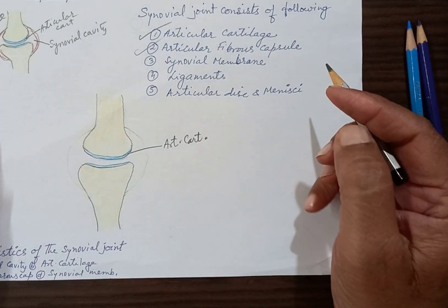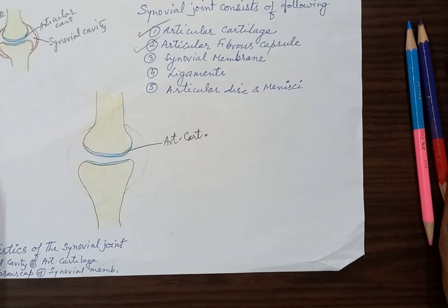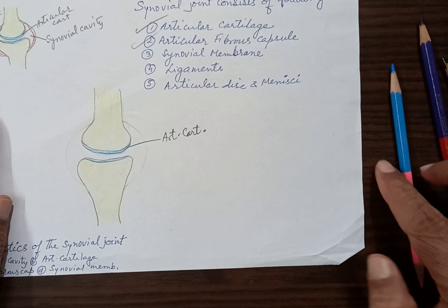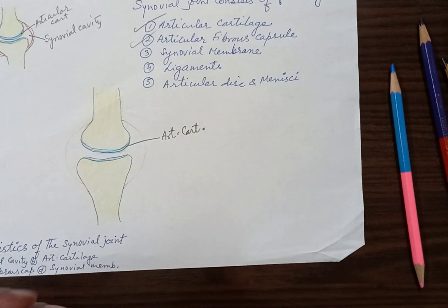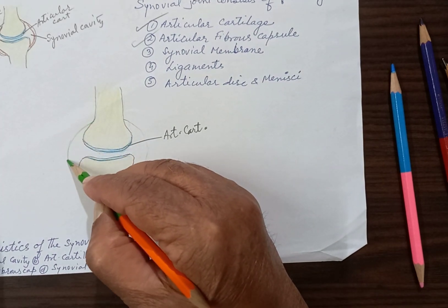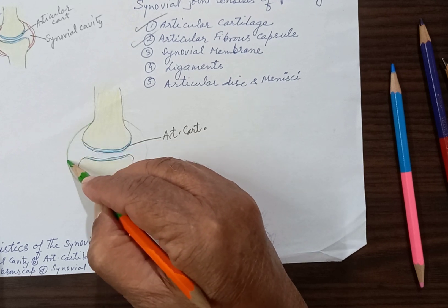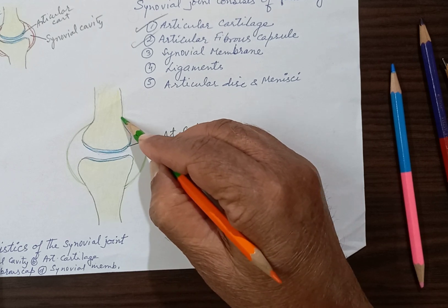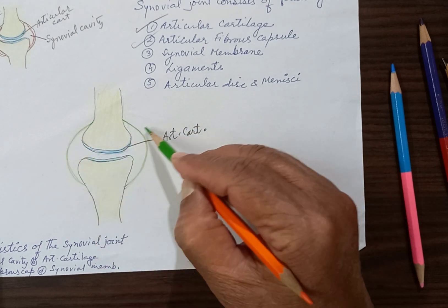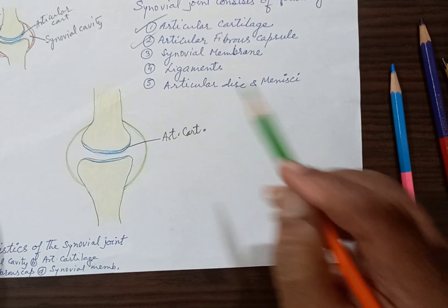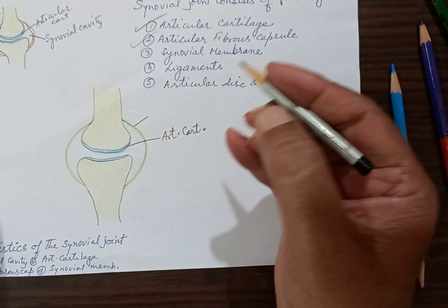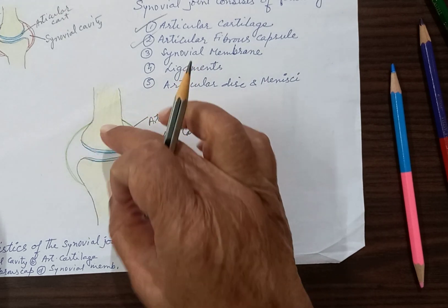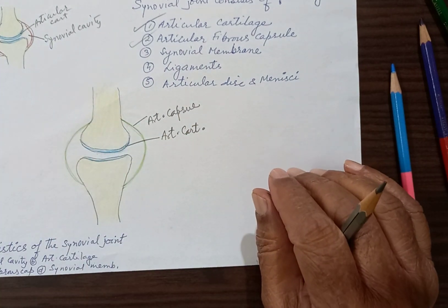Let us come to the second component of the synovial joint — the articular capsule. This articular capsule joins the two articulating bones, proximal and distal. The articular capsule is made up of fibrous tissue, specifically collagen fibrous tissue. It is made up of fibrous connective tissue of collagen variety. It surrounds the ends of the two bones completely, all around like a sleeve.